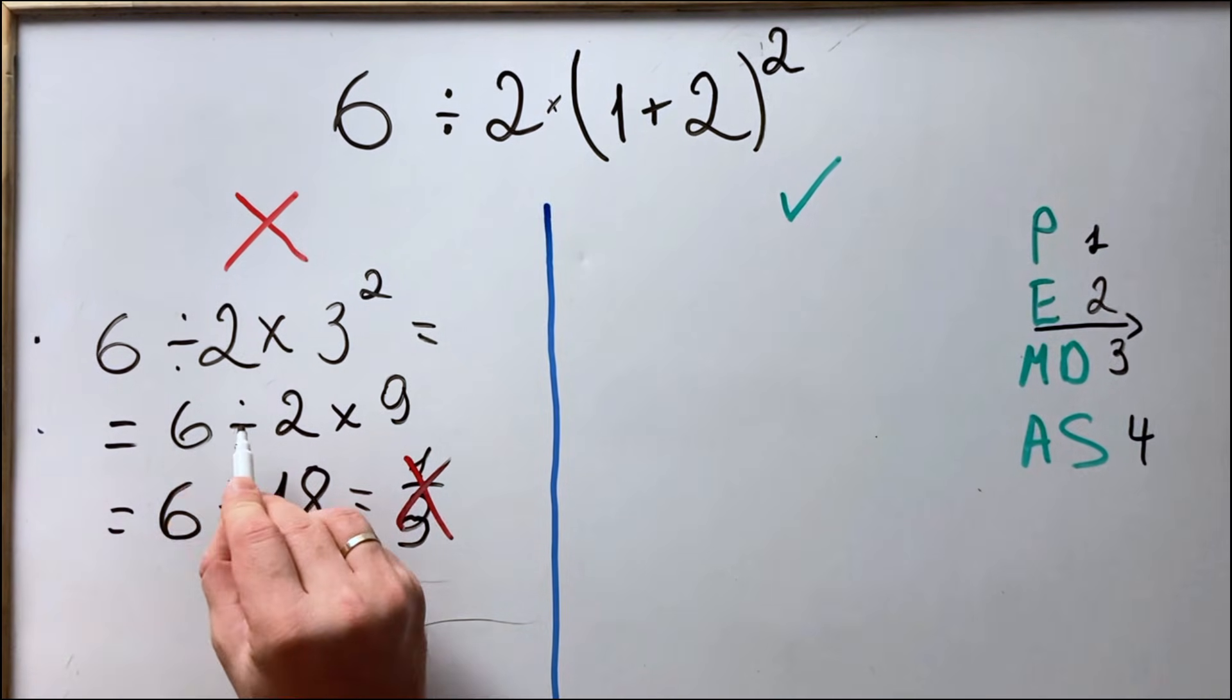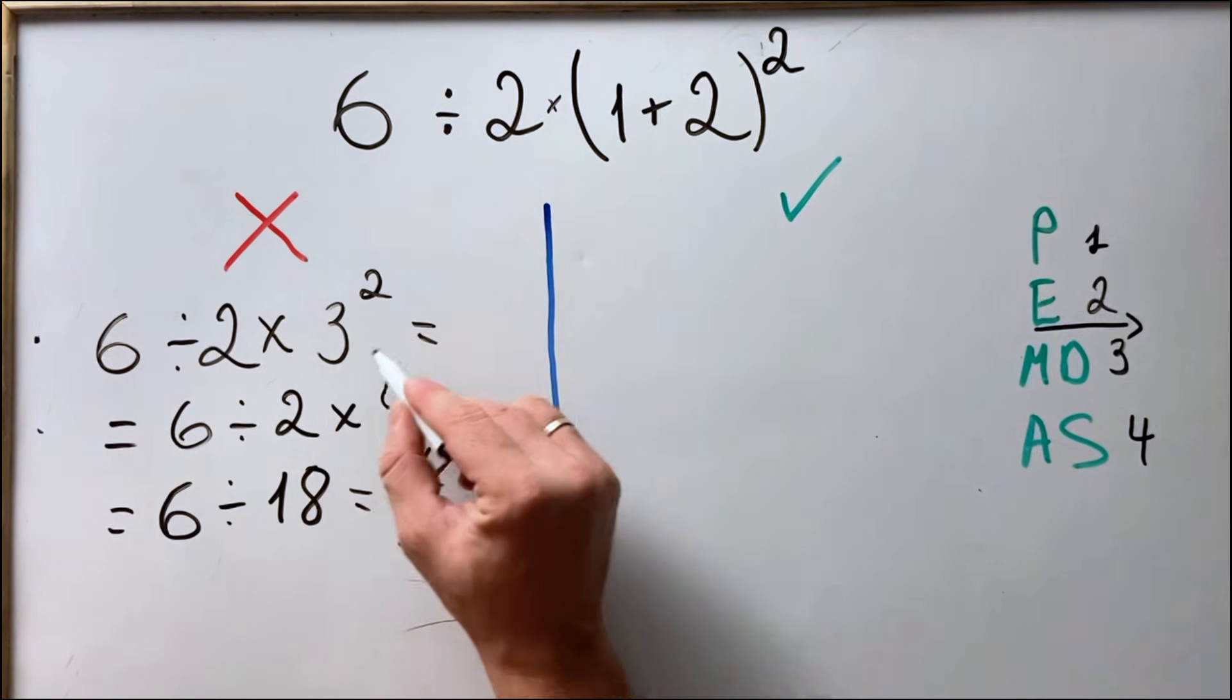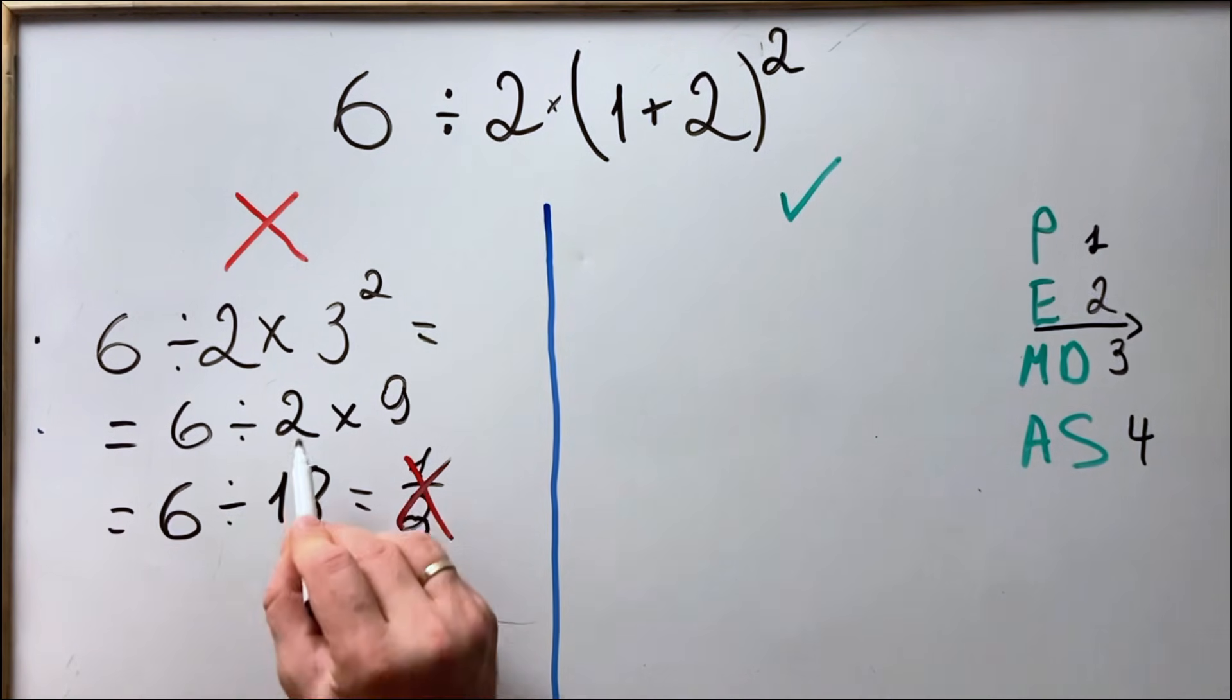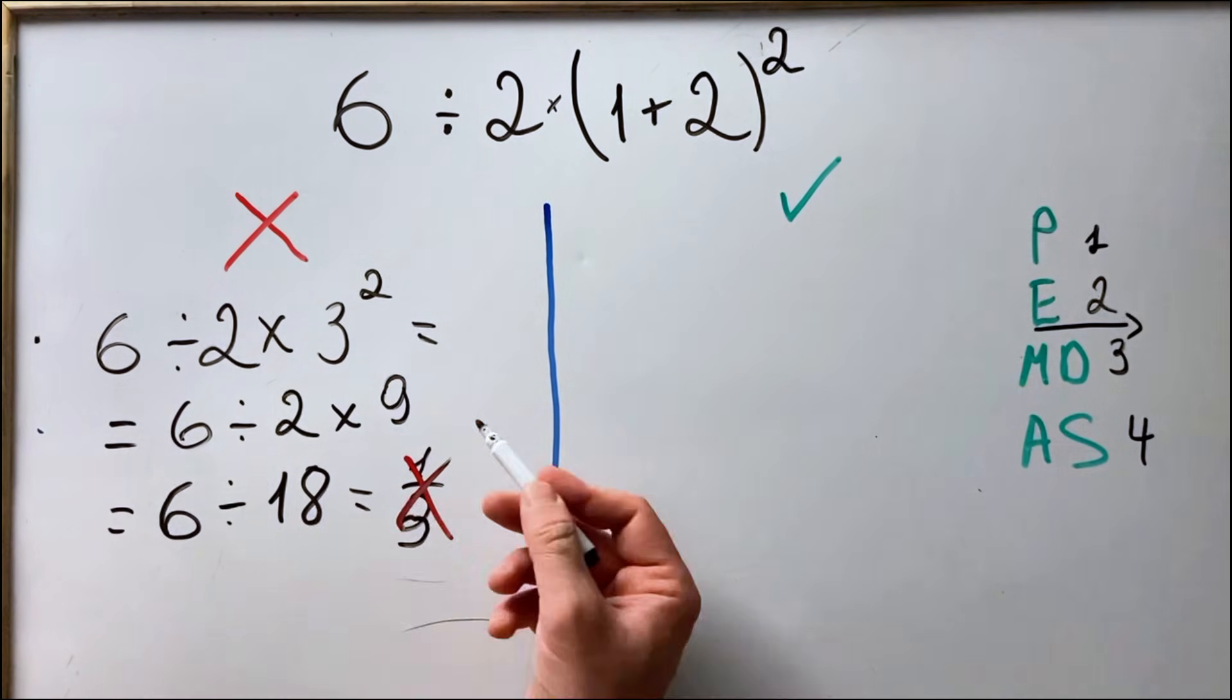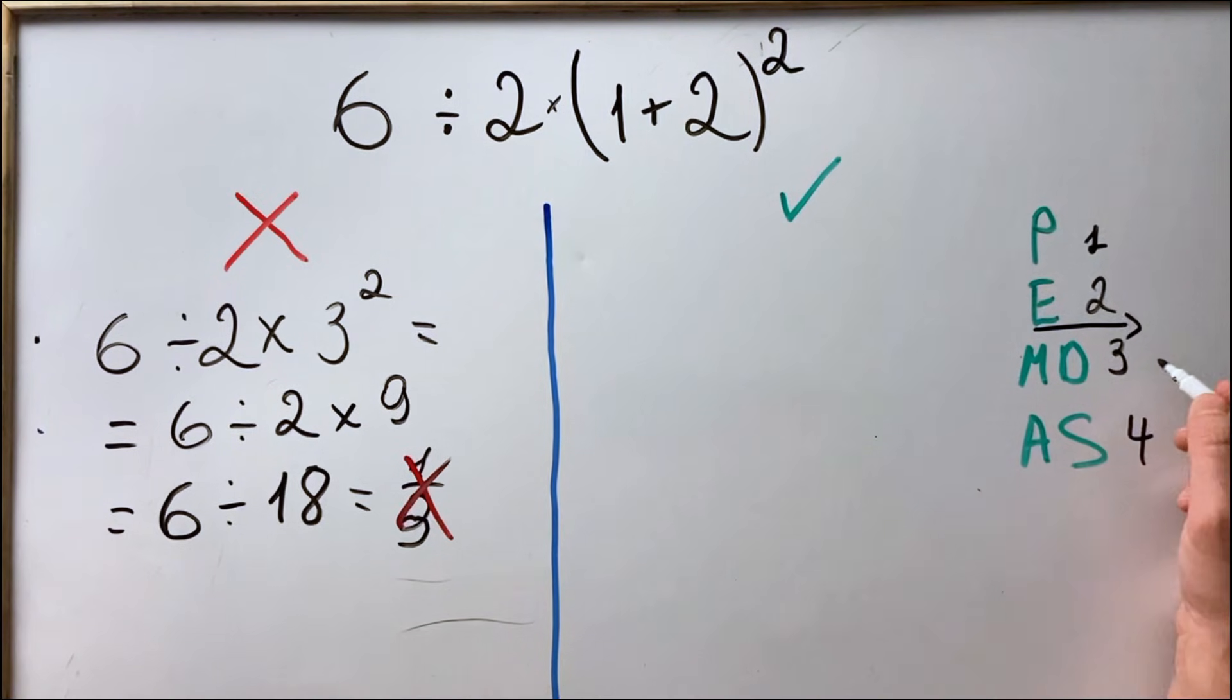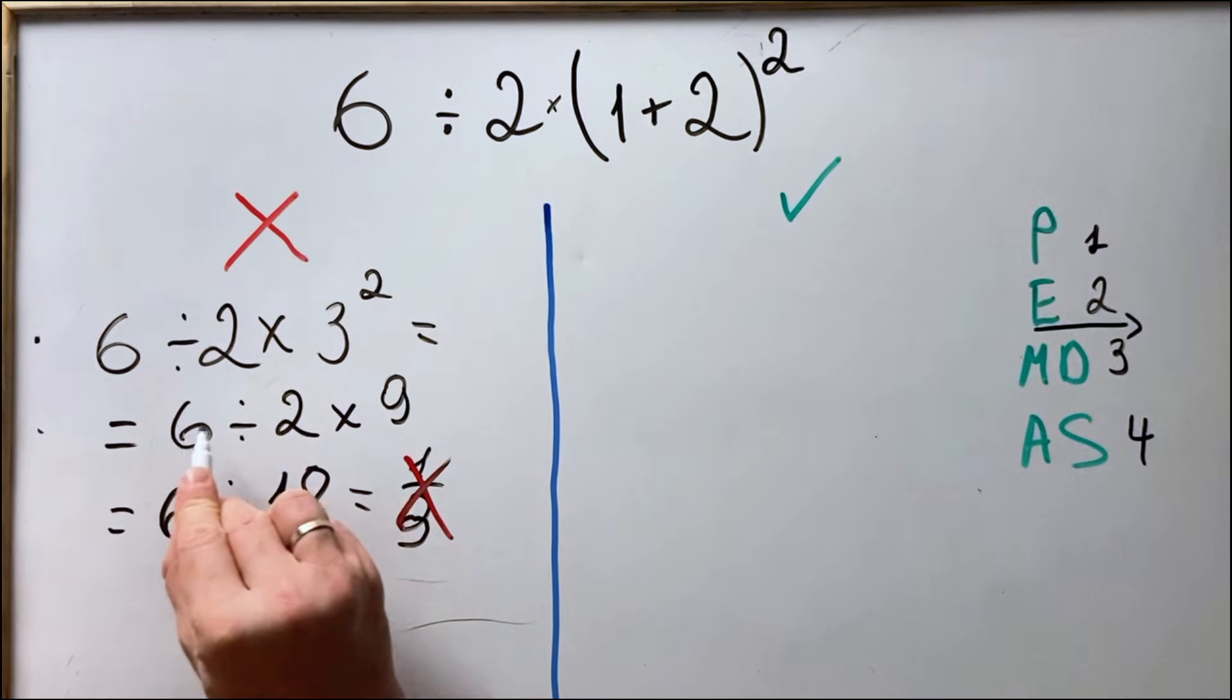So here we have 6 divided by 2 multiplied by 9. After solving the parenthesis and exponents, we must do the division and then the multiplication. Not 2 multiplied by 9, but 6 divided by 2 first. Because this is what PEMDAS order of operation rule states: multiplication and division must be done from left to right.